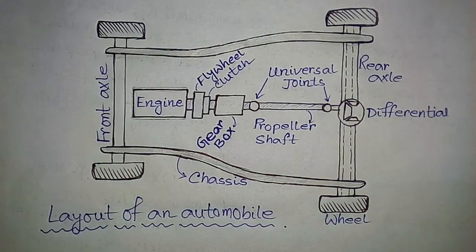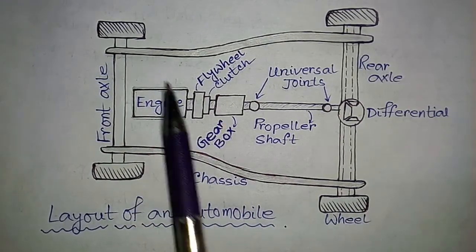Hi friends, today I discuss about the general layout of an automobile. Here I draw a basic layout of a four-wheeler automobile. Let's understand how the power from the engine reaches the wheels. This is the chassis or frame.